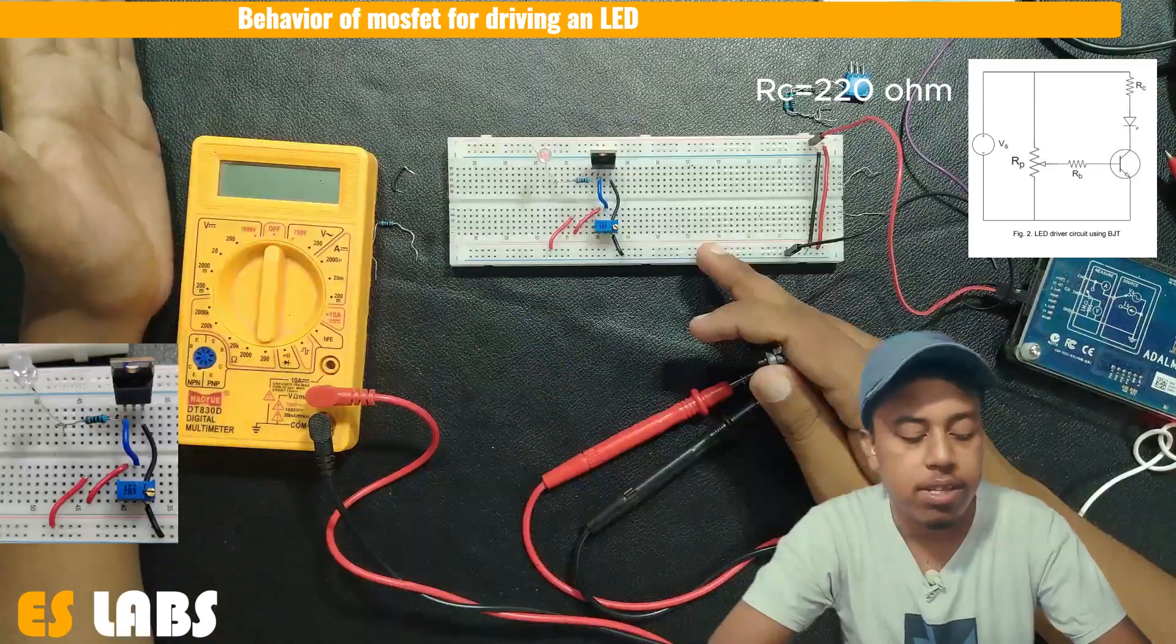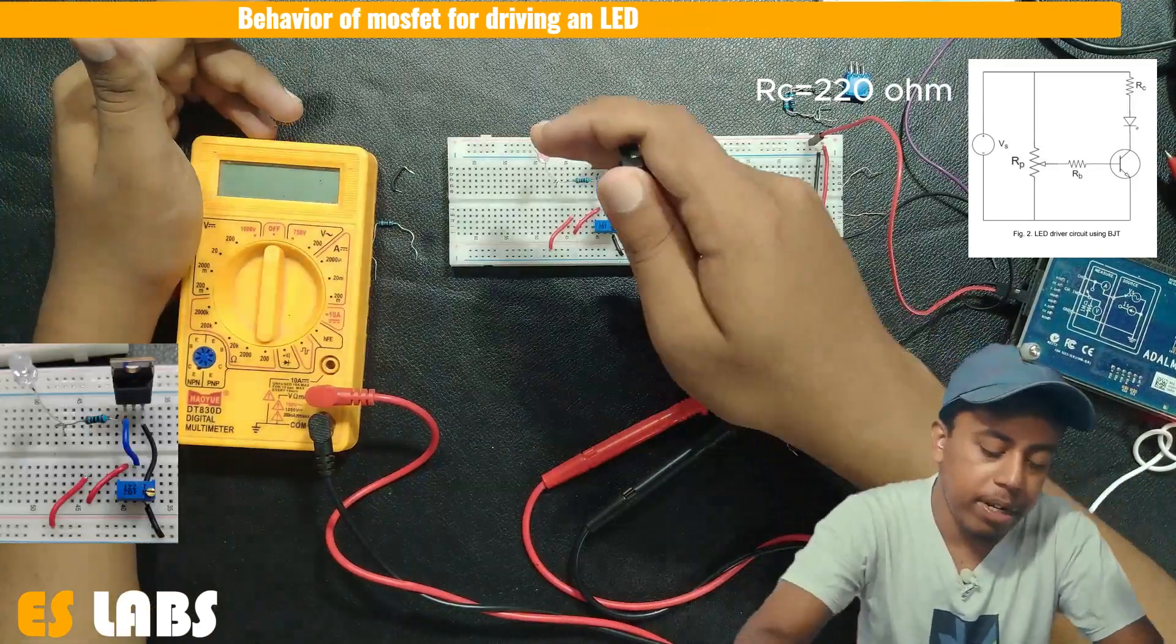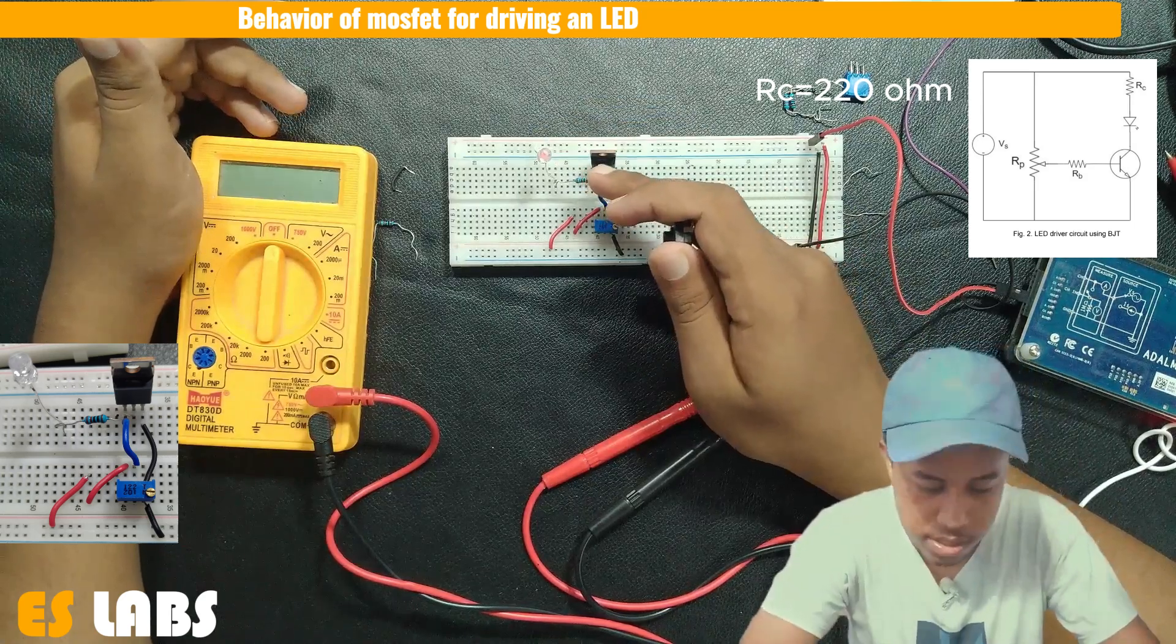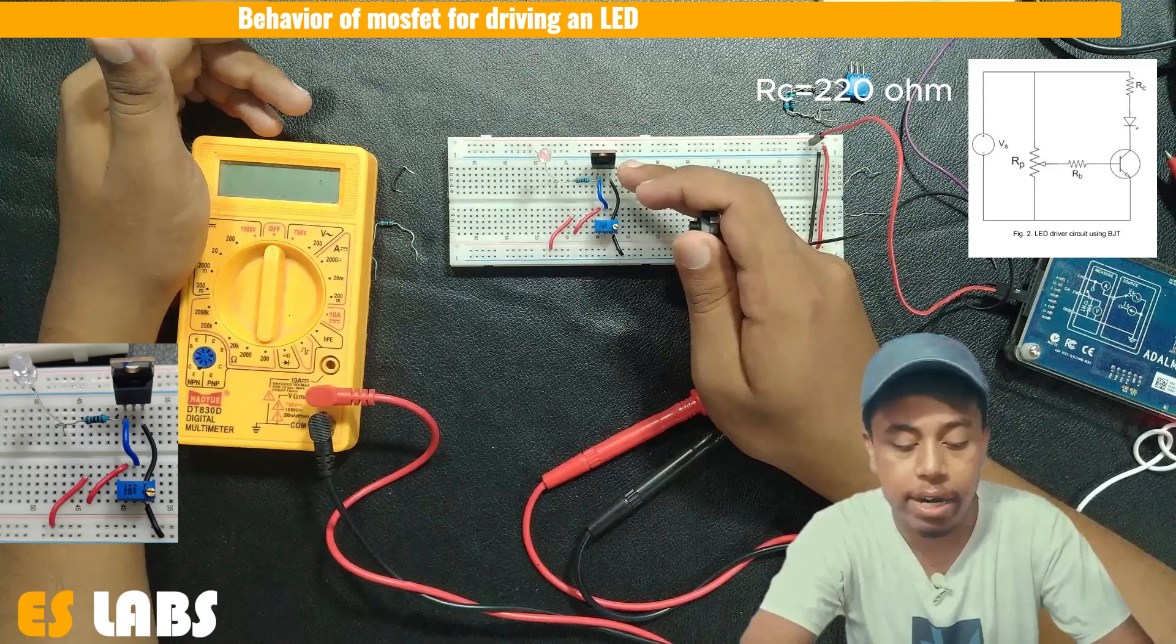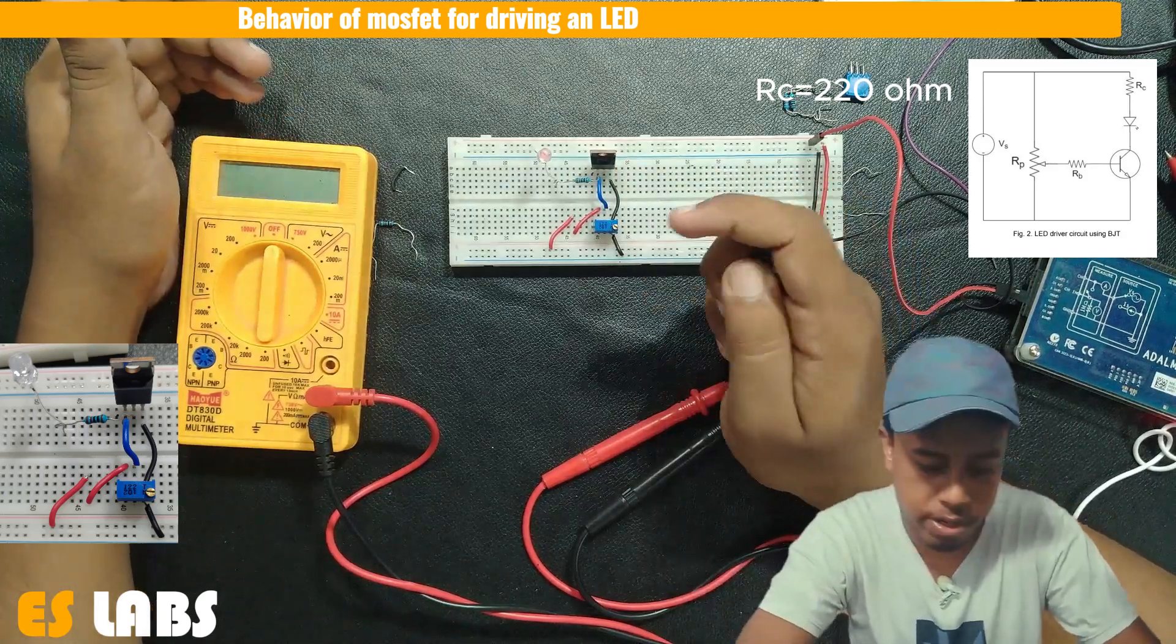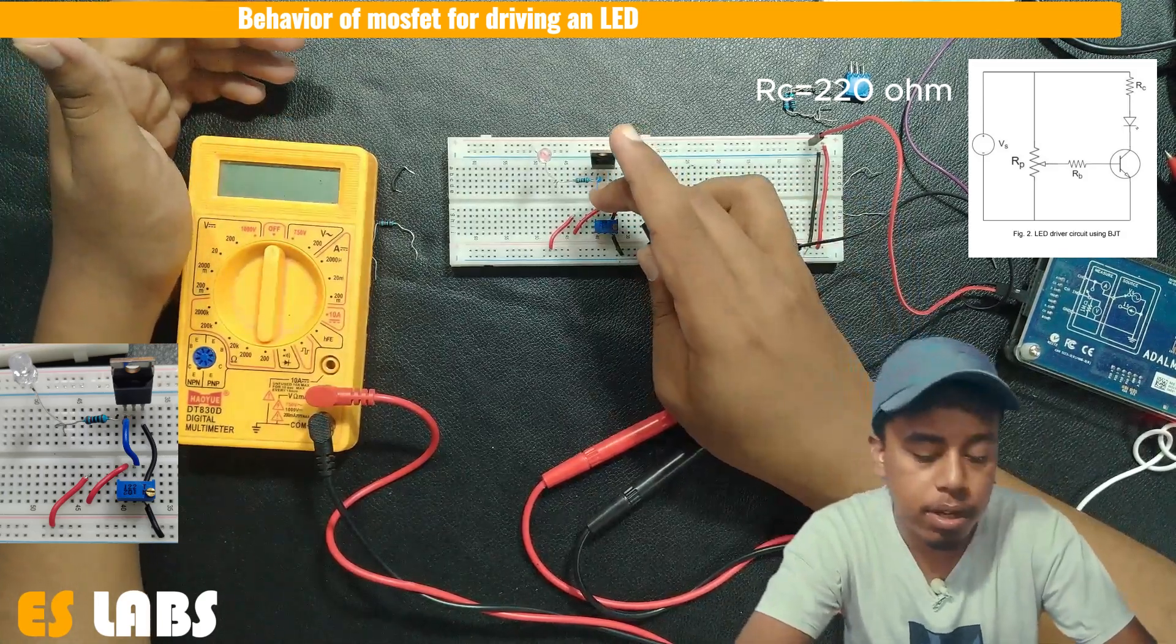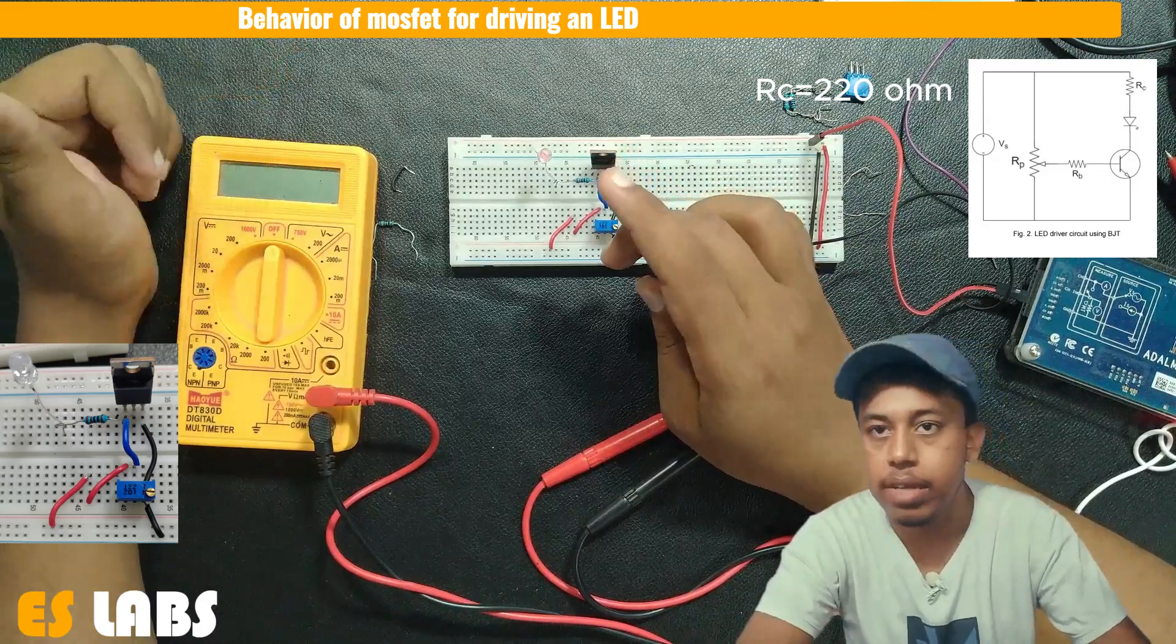So this is the circuit for driving an LED to the MOSFET. I have connected this LED in series with this 200 ohm resistor. And this resistor is going in the drain, which is the second terminal of the MOSFET. The gate is connected directly to the output of this potentiometer in the second terminal.